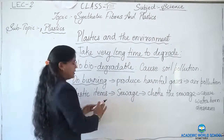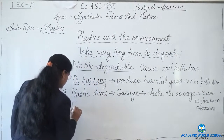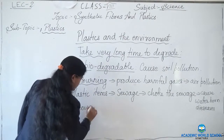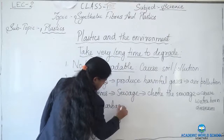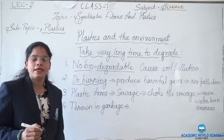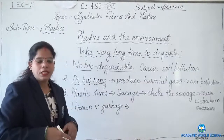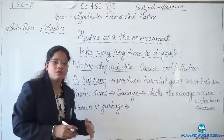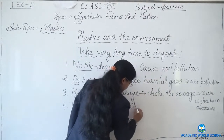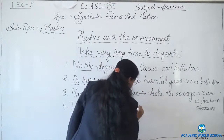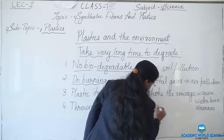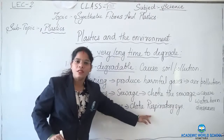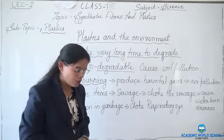The next point is that if plastic items are thrown in the garbage, certain animals which take their food from the garbage will eat these plastic materials. It will go into their respiratory and digestive system and choke their body system. If the respiratory system will be blocked, the animal will not be able to do respiration and it can lead to death.